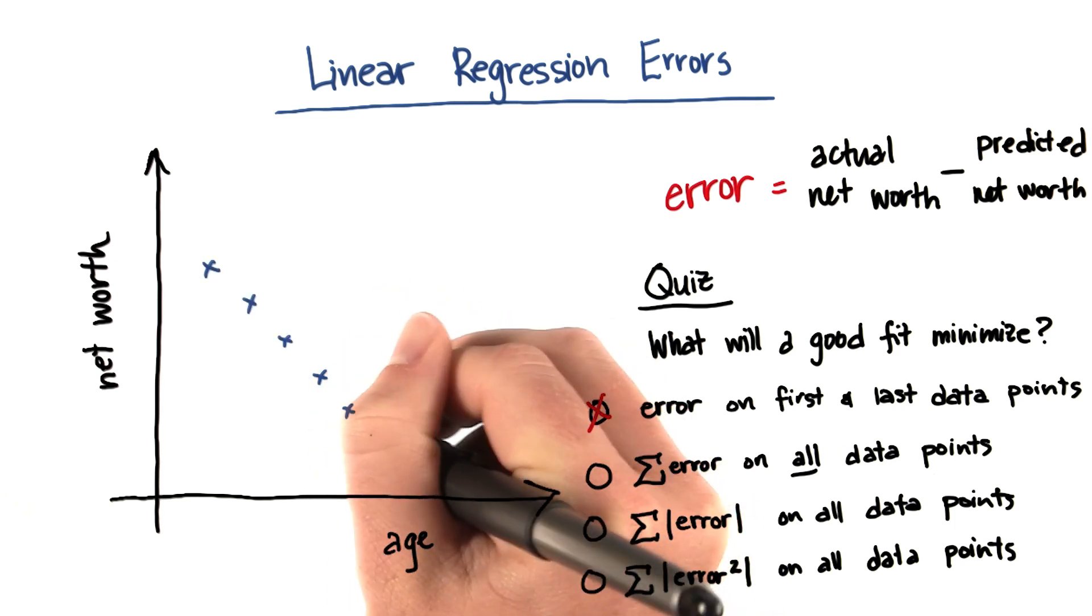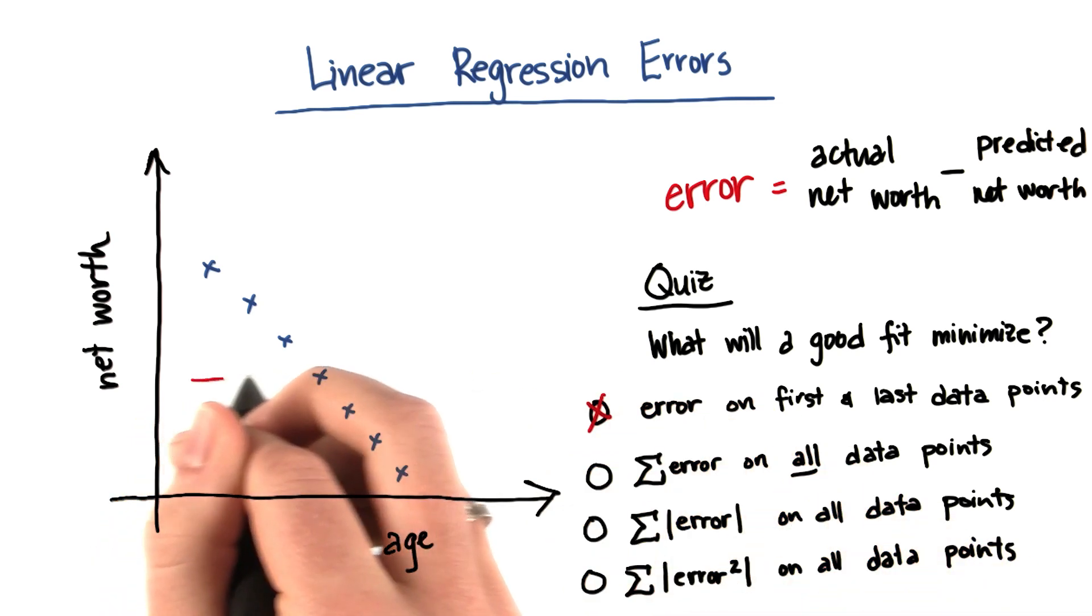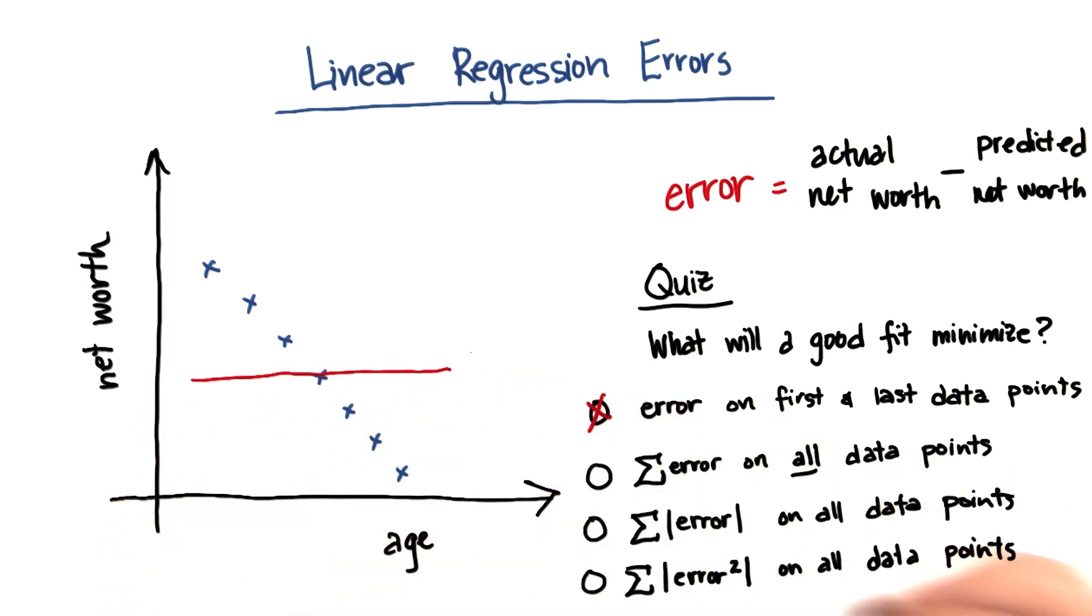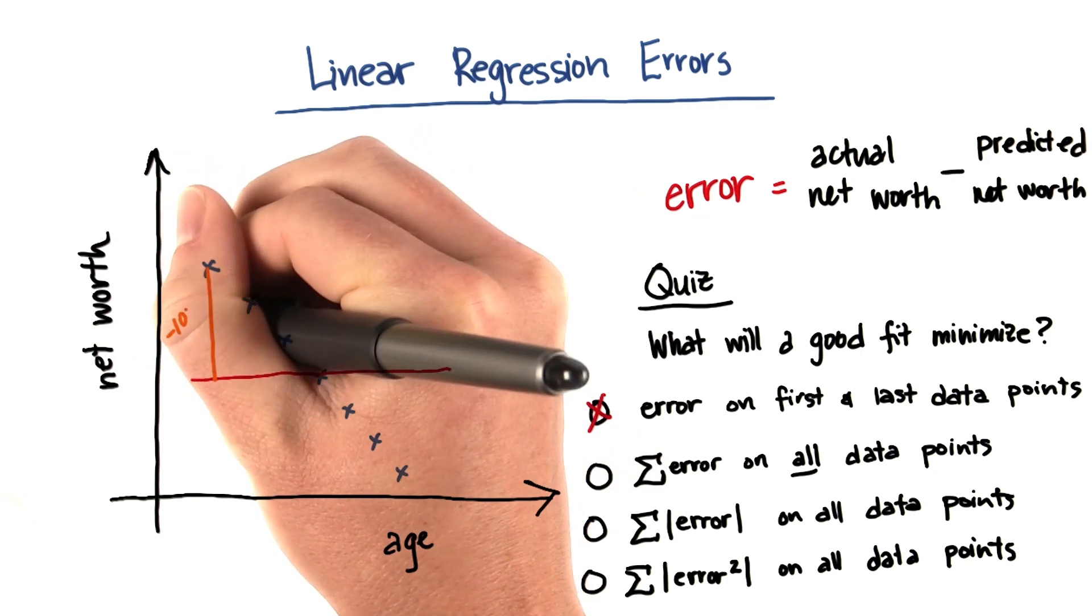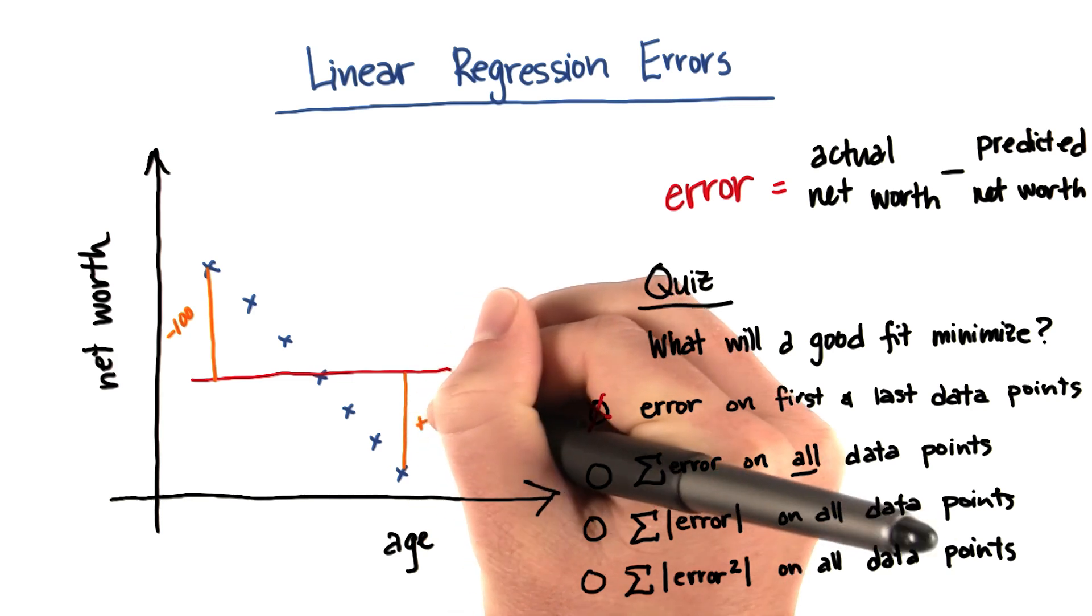Suppose you have really lovely linear data like this, but you fit it with a regression that looks like this. Clearly not a very good fit. However, if this error is, let's say, negative 100, and this error is positive 100,